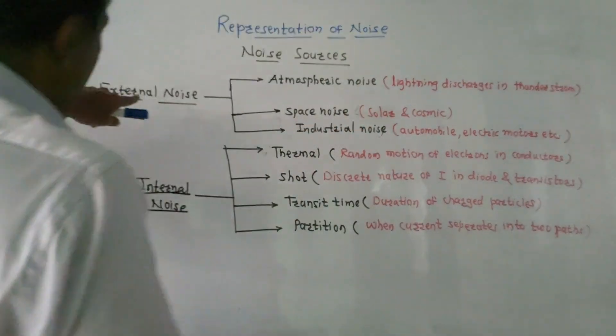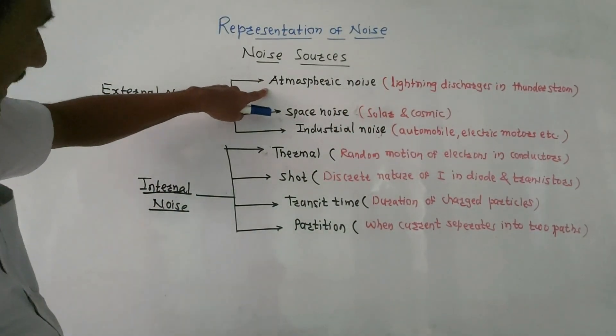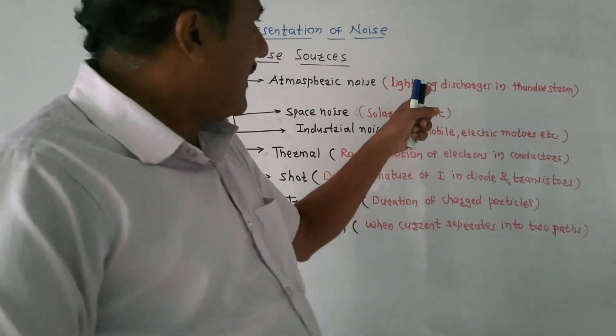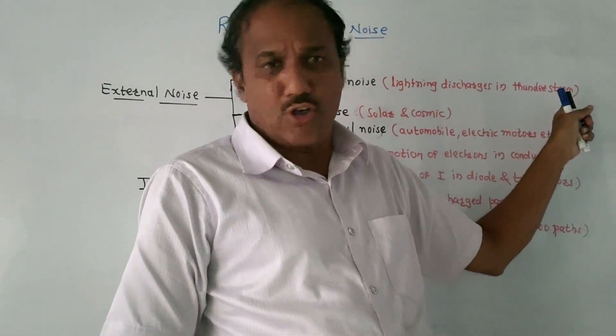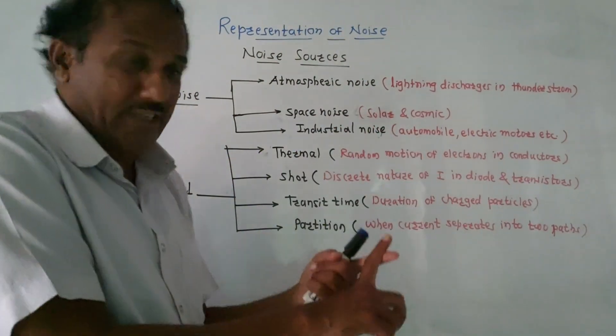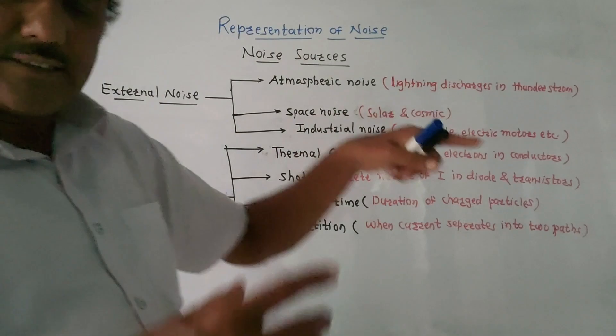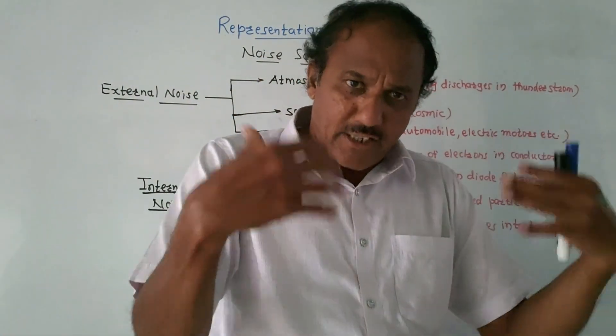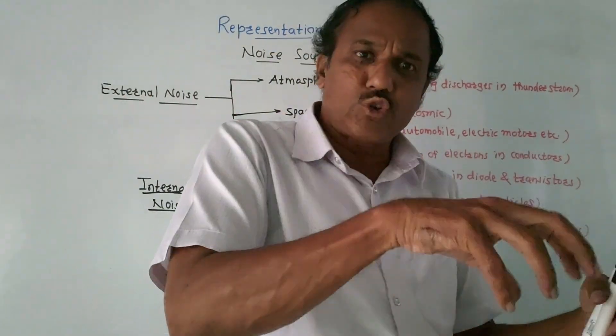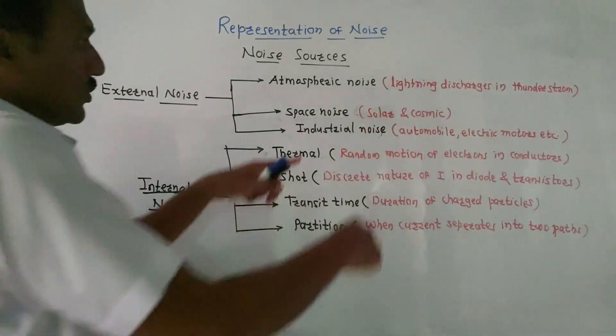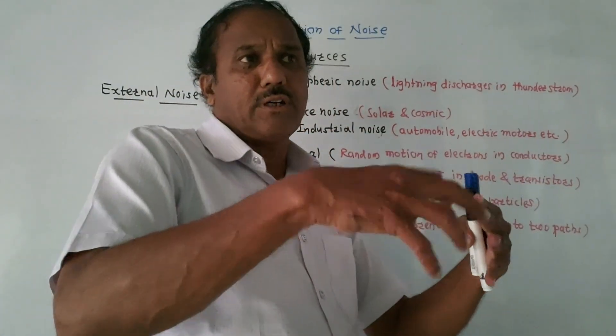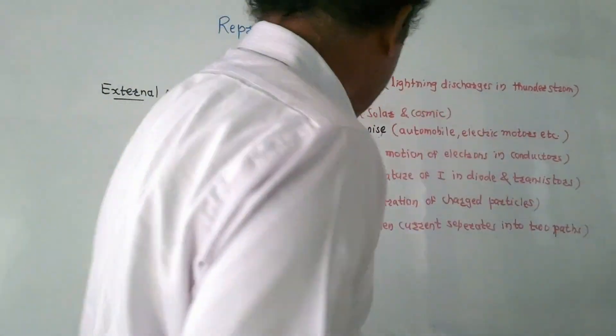Three major types of external noise are there. First is atmospheric noise. A good example is lightning discharges in case of thunderstorm. This is the good example where atmospheric noise is generated, which is external noise. Then second is space noise. The solar is creating again a noise, then apart from solar there are many stars which are again producing its own noise. So these are under cosmic, related to space noise. This is causing major effects in case of communication like satellite, mobile, and so on.